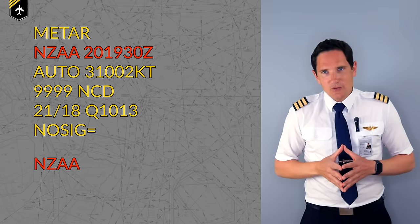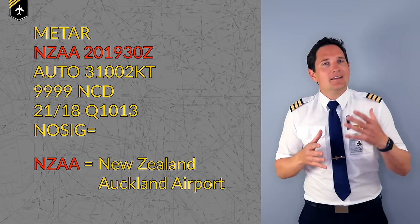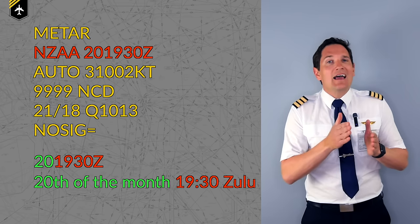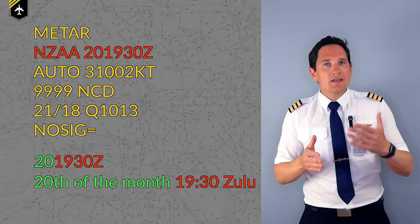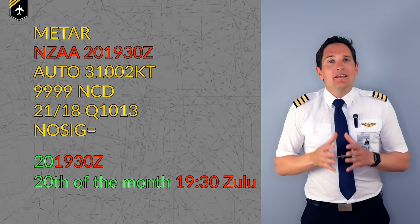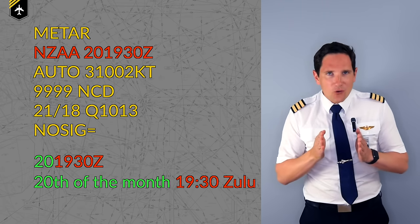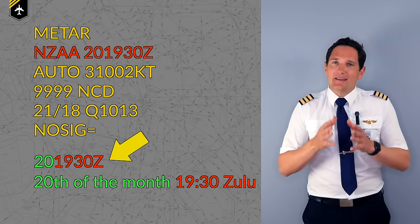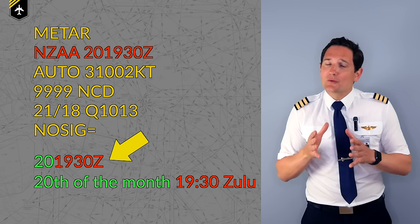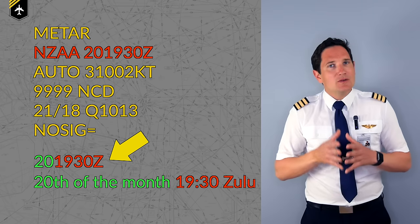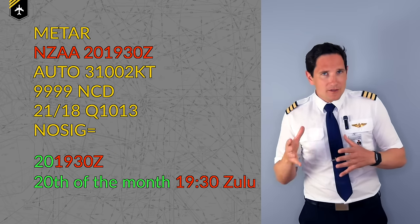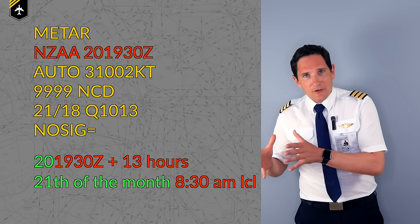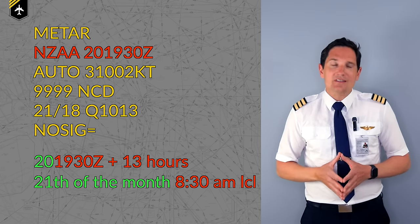The four-letter code November Zulu Alpha Alpha is the ICAO code for Auckland Airport, and the time code breaks down as the date and a time on that day to show when the report was issued. Note that the time of issue is always given in UTC, which is why it is marked with a Z for Zulu time. This means that this report was issued at 7:30pm Zulu on the 20th but is relevant to the conditions in New Zealand at 8:30am on the 21st due to the 13-hour time difference.